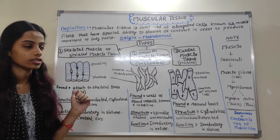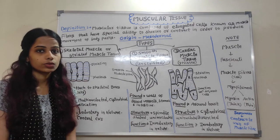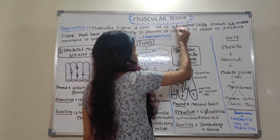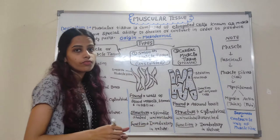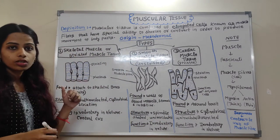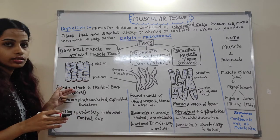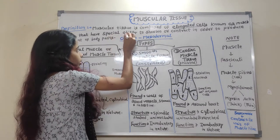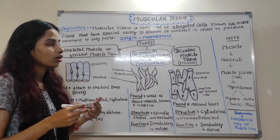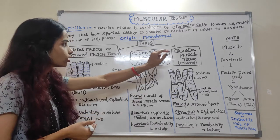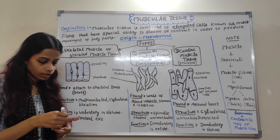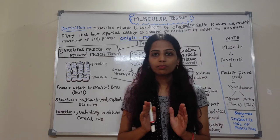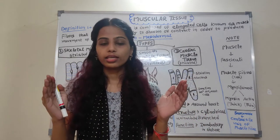Muscular tissue is composed of elongated cells known as muscle fibers. These muscle fibers have a special ability to shorten, contract, or relax in order to produce movement of body parts.